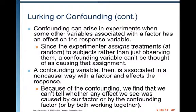Confounding can arise in experiments when some other variable associated with the factor has an effect on the response variable. Since the experimenter assigns treatments at random to subjects rather than just observing them, a confounding variable can't be thought of as causing that assignment. A confounding variable is then associated in a non-causal way with the factor and affects the response. Because of confounding, we can't tell whether any effect was caused by our factor, by the confounding factor, or by both working together. We try to eliminate this by assigning subjects to treatments at random, so whatever confounding variable might cause a subject to choose a particular treatment is not involved.